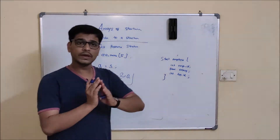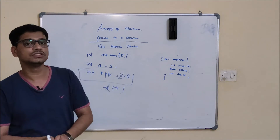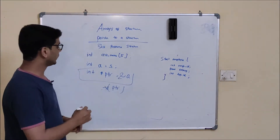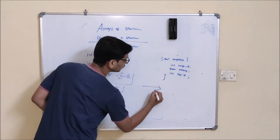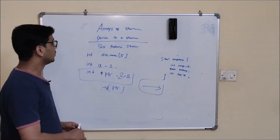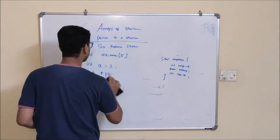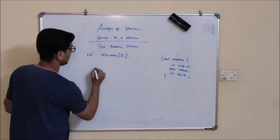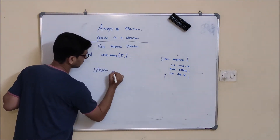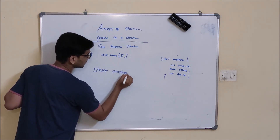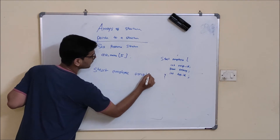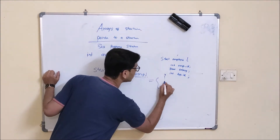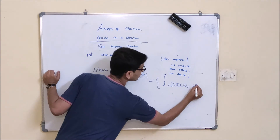Similarly for a structure we do the same thing, but with one twist: since a structure has multiple variables, to retrieve data from a structure pointer we use the arrow symbol. Suppose for an employee structure I have created a variable emp1 with values — for example, salary 20,000 and departmentId 2.